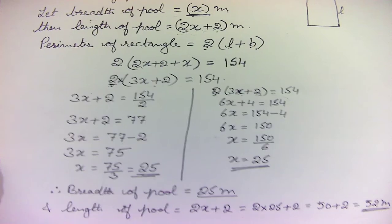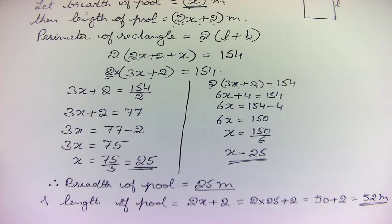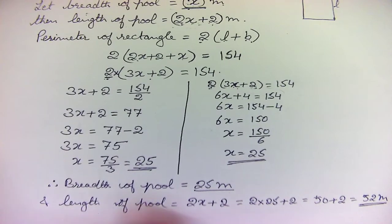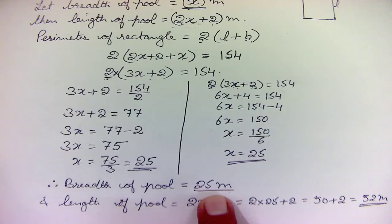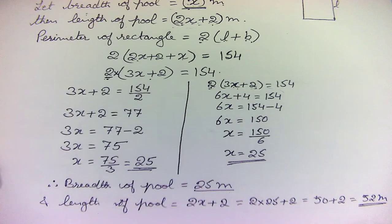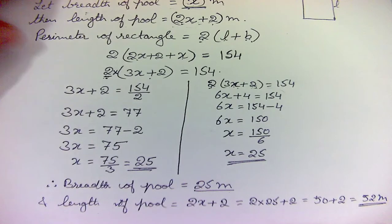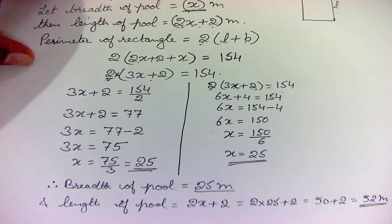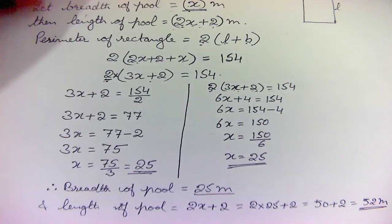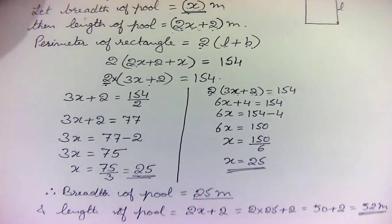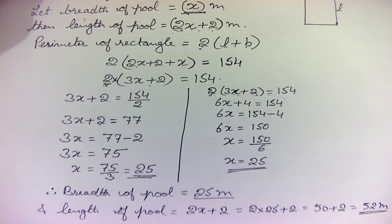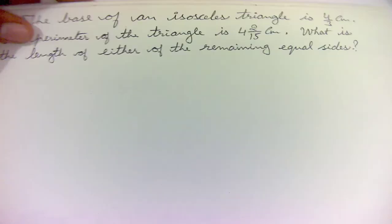So the breadth of the pool is 25 meters and the length of the pool is 52 meters. This is what we had to calculate. Hope this question is clear. Now let us move towards question number 3.